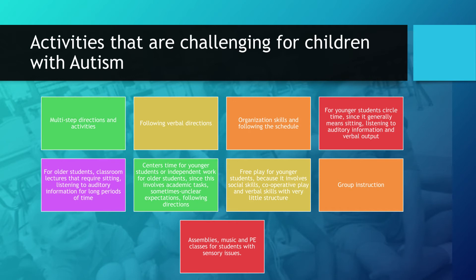Activities that are challenging for children with autism include: for younger students, circle time, since it generally means sitting and listening to auditory information with verbal output; for older students, classroom lectures that require sitting and listening to auditory information for long periods of time; centers time for younger students or independent work for older students, since this involves academic tasks, sometimes unclear expectations, and following directions; free play for younger students, because it involves social skills, cooperative play, and verbal skills with very little structure; group instruction; and assemblies, music, and PE classes for students with sensory issues.